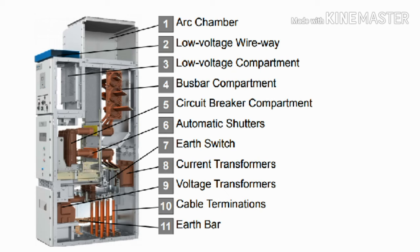Eighth is the current transformer. The current transformer helps to measure the current flow from the downstream and displays it in the low voltage compartment section on the ammeter. Ninth is the voltage transformer, which is placed on the downside of the circuit breaker — the bottom part of the switchgear panel.